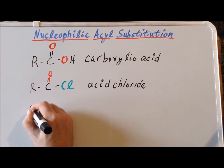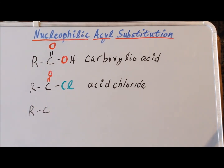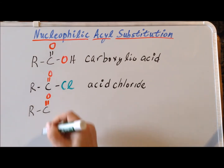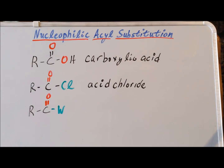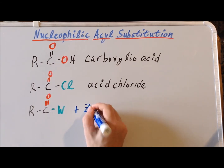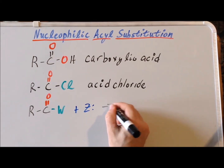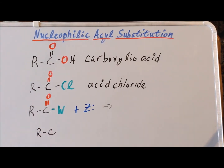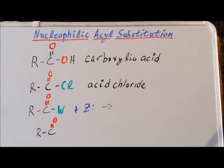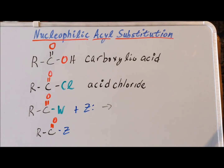We can write a generic structure for an acyl compound as follows: we have the aliphatic part, we have the acyl group, and then we have some sort of leaving group. Ultimately, we can replace the leaving group with a nucleophile, which we'll write as Z, through a reaction which we call nucleophilic acyl substitution — in a process that is analogous to, but not identical to, nucleophilic substitution second order.